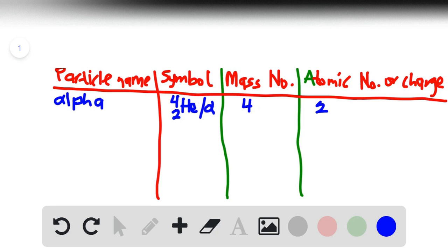And then the next one will be beta, or an electron. And then the symbol is 0e/-1, with the top number being 0 and the bottom being negative 1. So as we did earlier, the mass number is 0 and the atomic number will be negative 1.